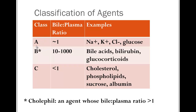There are three different classes of agents based on the bile-to-plasma concentration ratio. If the ratio is one, they're about equivalent — examples are electrolytes like sodium, potassium, chloride, and glucose. If it's greater than one — between ten and a thousand — they're more highly concentrated in the bile than the plasma; this includes bile acids, bilirubin, and glucocorticoids. These are considered cholephiles because they accumulate in the bile over the plasma. Finally, anything in higher concentration in the plasma than in the bile is a class C agent — that's most drugs, as well as cholesterol, phospholipid, sucrose, and albumin.